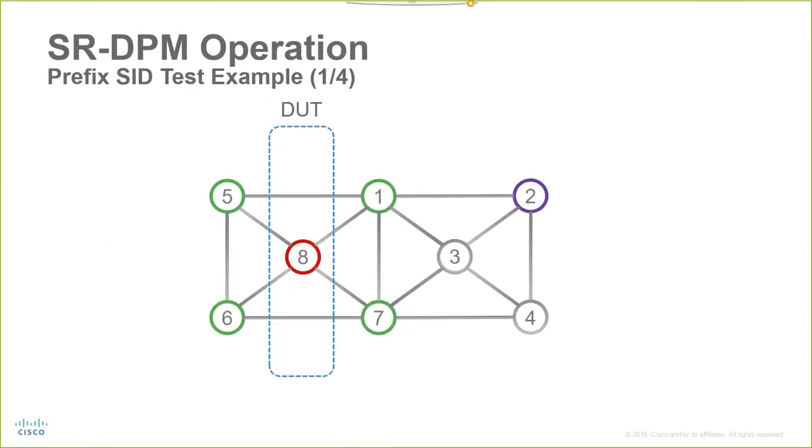DPM then moves to the second phase, the so-called prefix seed test, where now the node validates the forward inconsistency for each destination prefix across a set of downstream paths.